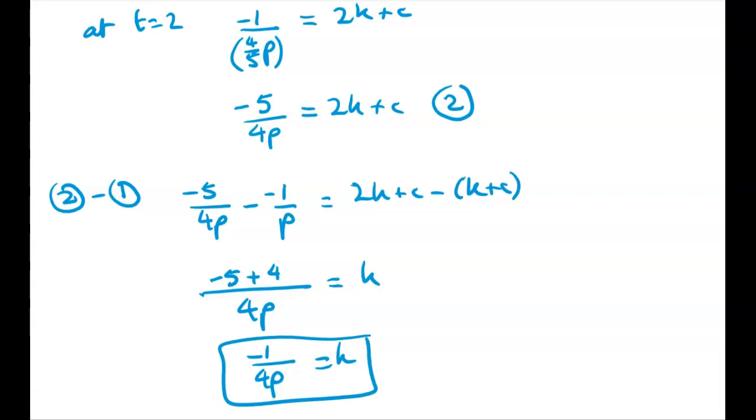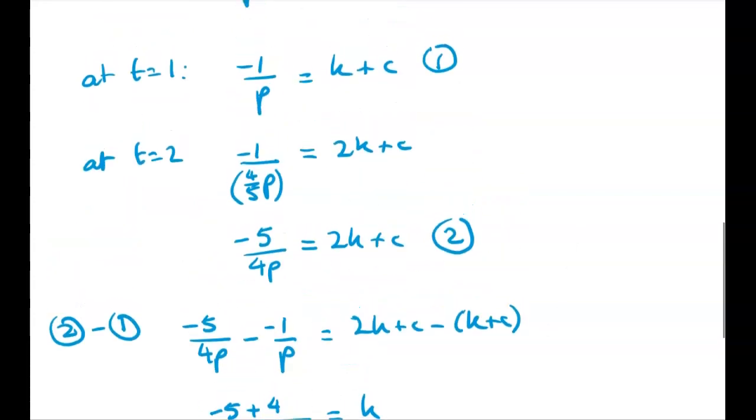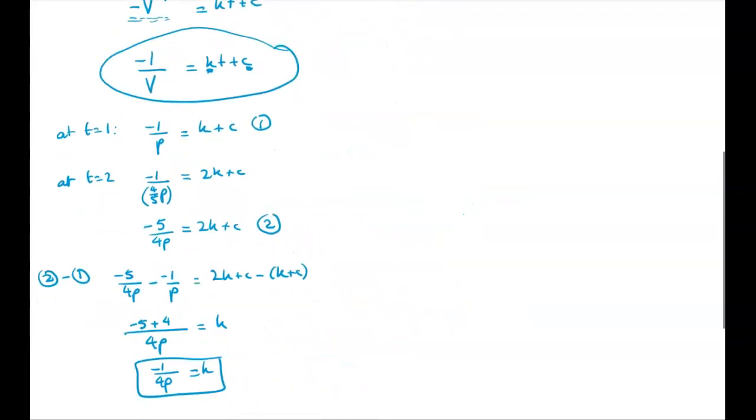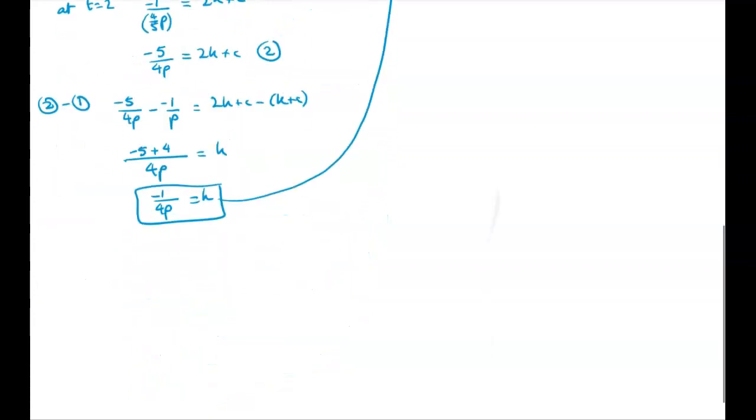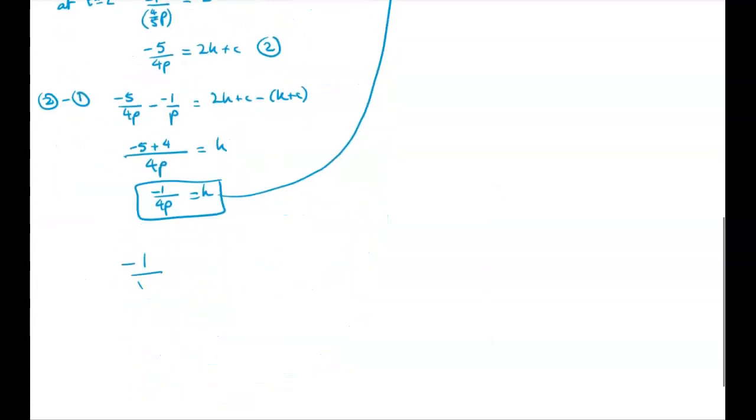All right that means that I can now go back and put that in to what we had up here. So let's just substitute the value of K in. So we have negative 1 over V is equal to negative 1 over 4P times T plus C. So we've got this. Now we've somehow got to figure out what C is. Well we can go back to using the fact that at T equals 1, V is equal to P, and that's now going to give me a way to find C.